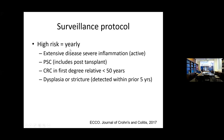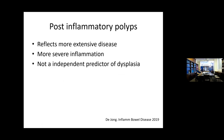The high-risk group is yearly: extensive disease with active inflammation, patients with PSC including those who've had a transplant, colorectal cancer in first-degree relatives who are young, and patients who've had previous dysplasia or a stricture detected in the prior five years. Post-inflammatory polyps reflect more extensive disease and more severe inflammation, but there's no evidence this is an independent predictor of dysplasia in studies — though intuitively it probably would make sense.